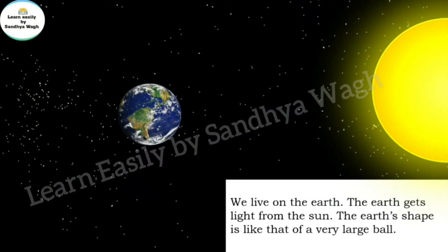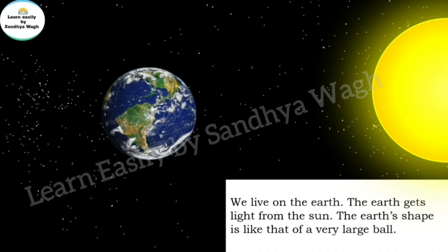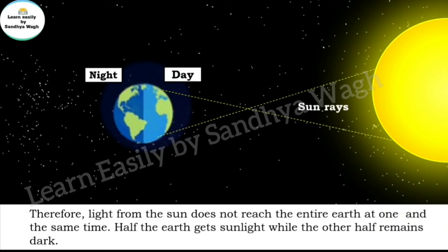We live on the earth. Therefore, light from the sun does not reach the entire earth at one and the same time.